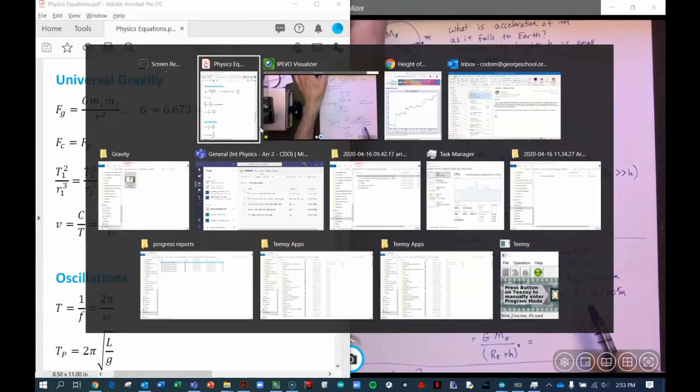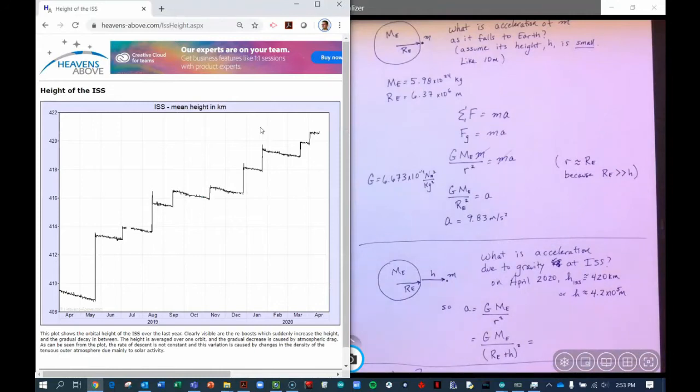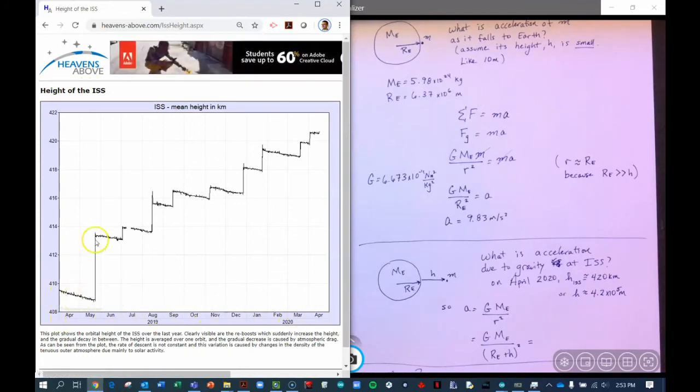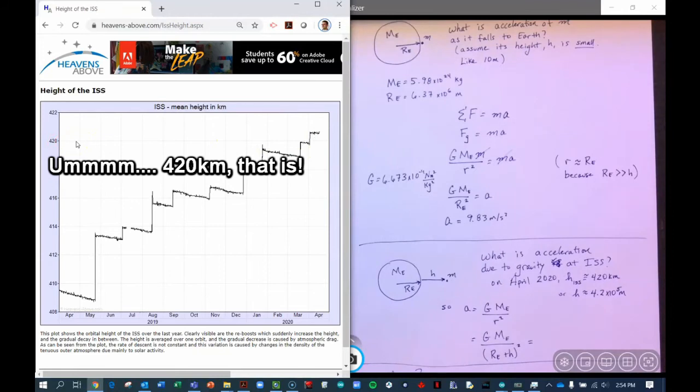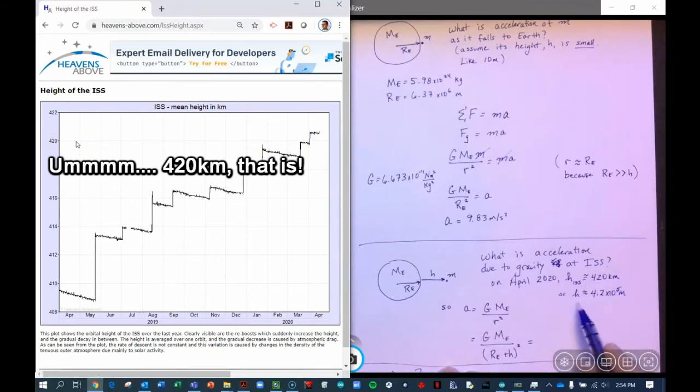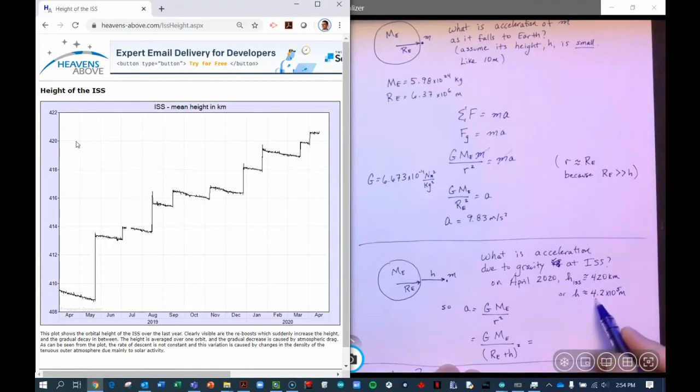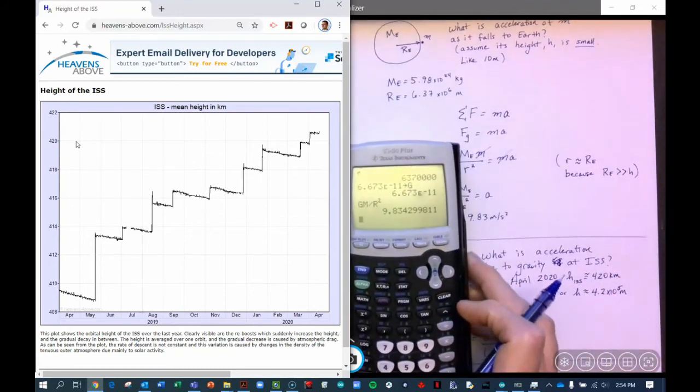And so if we flip over to one of my favorite all-time websites here, it's called heavensabove.com. And you can search on that for the height of the International Space Station. It shows over the last year what the space station height did. And you can see it falls to the Earth and then it adds more energy. It falls to the Earth and adds more energy through rocket thrusts. But anyway, this is April, the middle of April in 2020. And I'm just going to assume it's around 420 kilometers. So 420 kilometers tells us that the height above Earth is 4.2 times 10 to the 5 meters. So I'm going to go ahead and store that in another variable called h.